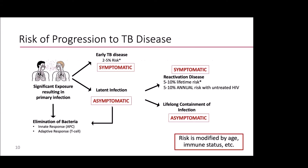After being exposed to TB, your body can sometimes eliminate bacteria and you don't ever develop a response — your test is negative and there's no issue. Where we come into play is when someone becomes infected: a small number of adults — less than 5% — will go on to develop early TB disease and become symptomatic shortly after infection. The vast majority of people have what we call latent infection. They're asymptomatic, their immune systems have contained the infection, and if they're not immunocompromised, they have a 5 to 10% lifetime risk of progressing to TB disease. If they are living with untreated HIV, they have a 5 to 10% annual risk of progressing to TB disease.